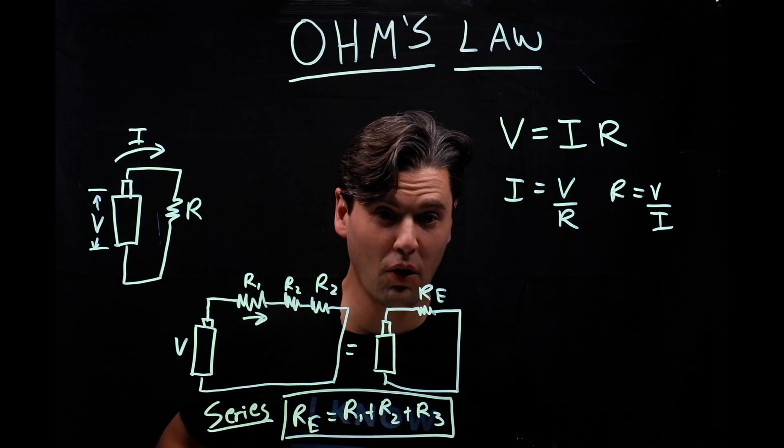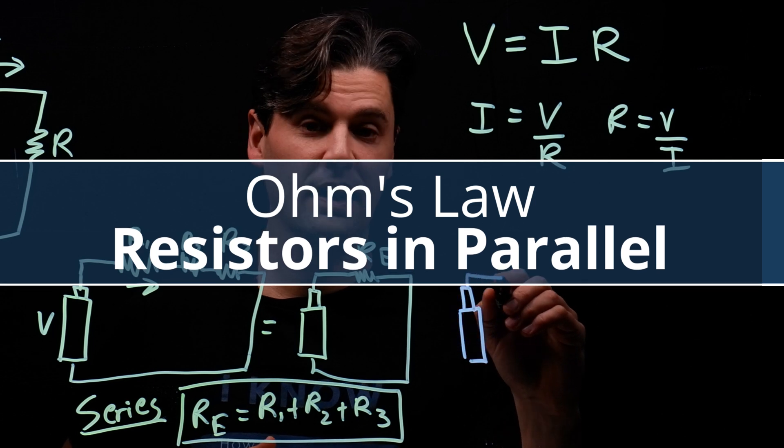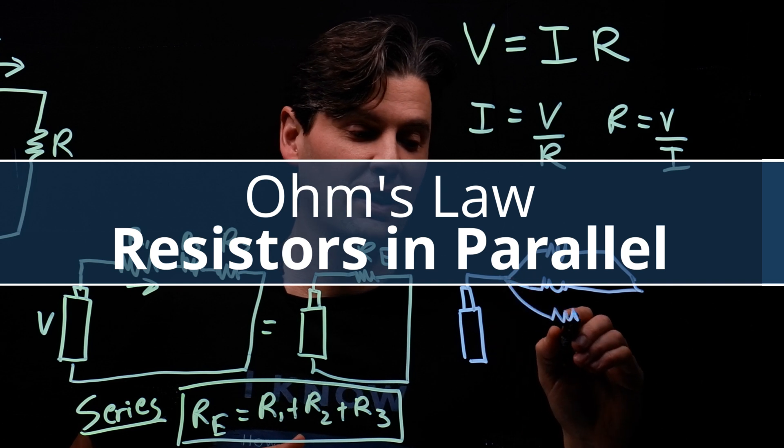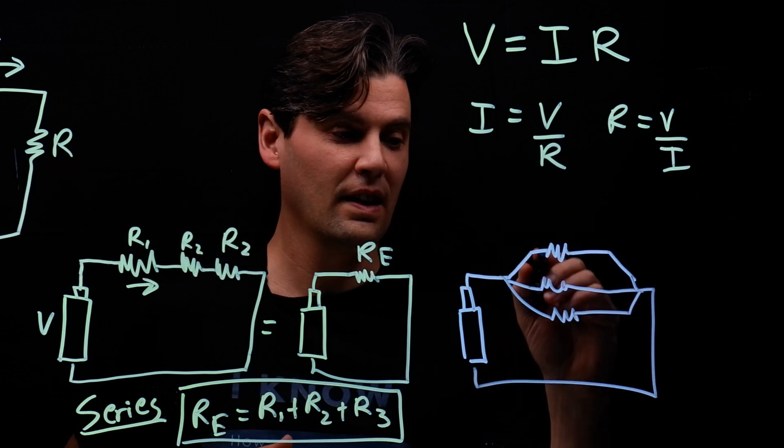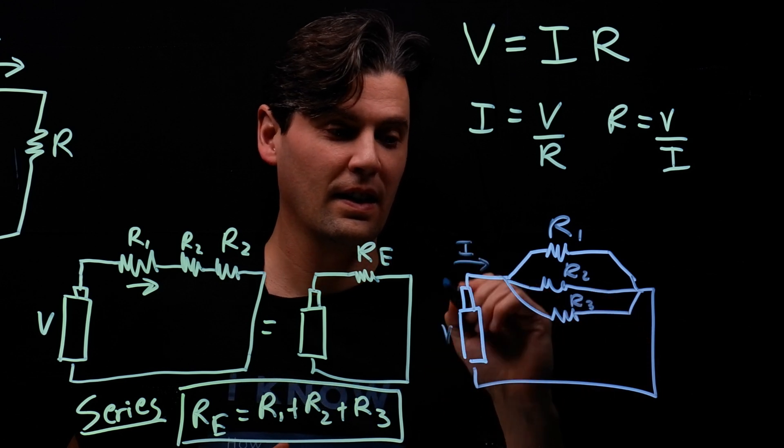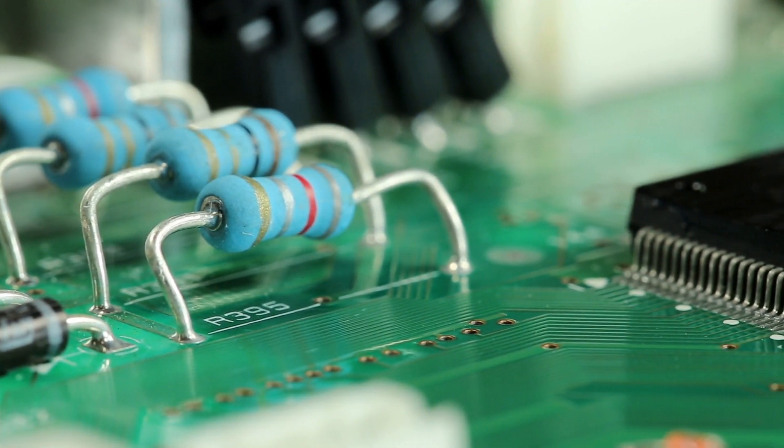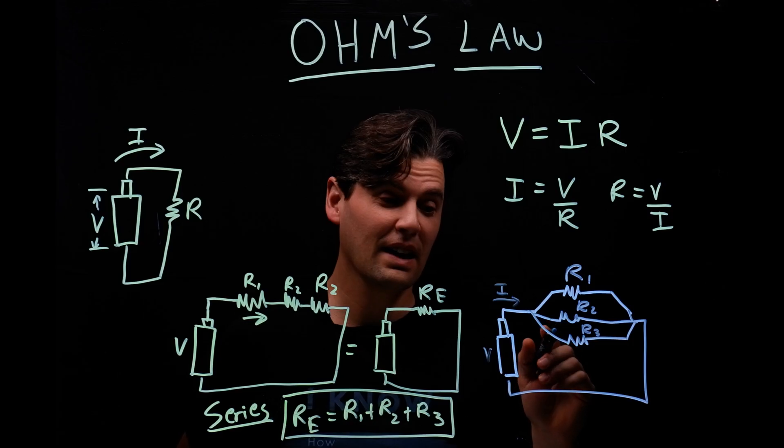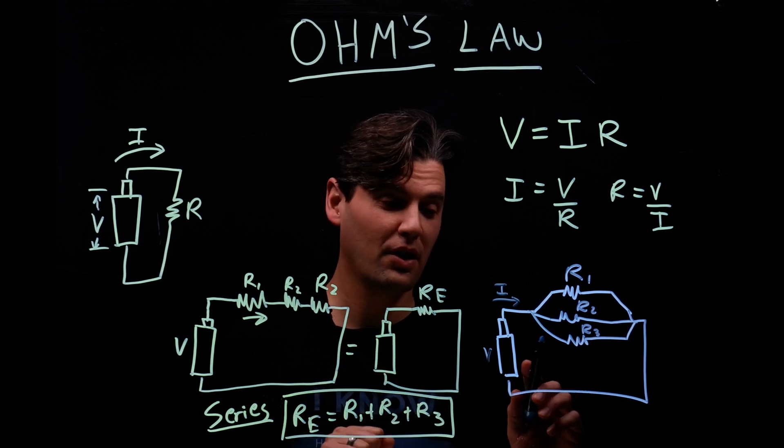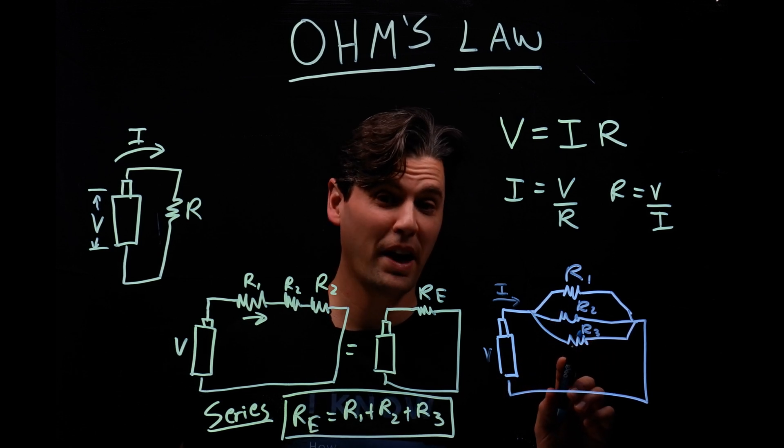And if they're going in parallel. So the same kind of thing here, now they're in parallel. So the idea is we want to describe an effective resistor that's going to describe this scenario where we have R1, R2, and R3 in parallel.